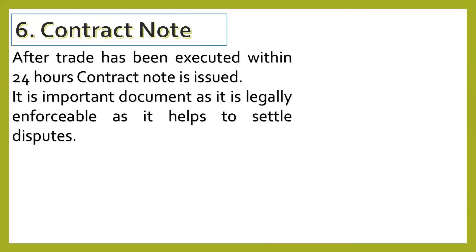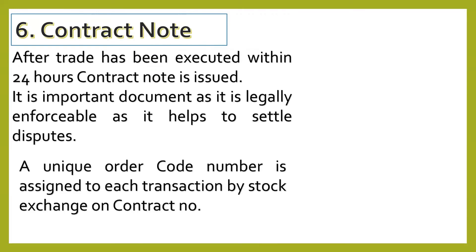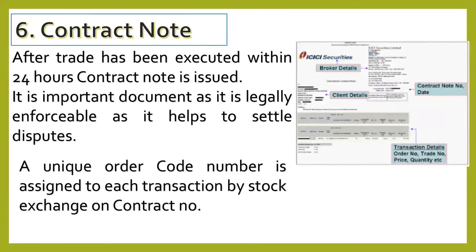After that comes the contract note, which is a legal document. It is issued within 24 hours of trade execution and is a very important document that carries a unique order code assigned by the stock exchange. You can see a specimen copy of the contract note which mentions broker details, client details, contract number, date of contract, transaction details, and brokerage fees charged by the broker.